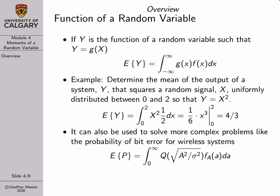Something engineers commonly do is deal with systems that have random inputs. If you have a deterministic system with a random input, you generally get a random output transformed by the system's operation. We can represent our system as a function g, where x is the input and y is the random output that's been altered. The PDF of y is different from the PDF of x after x passes through system g. Later in the course, we'll figure out how to determine that PDF.